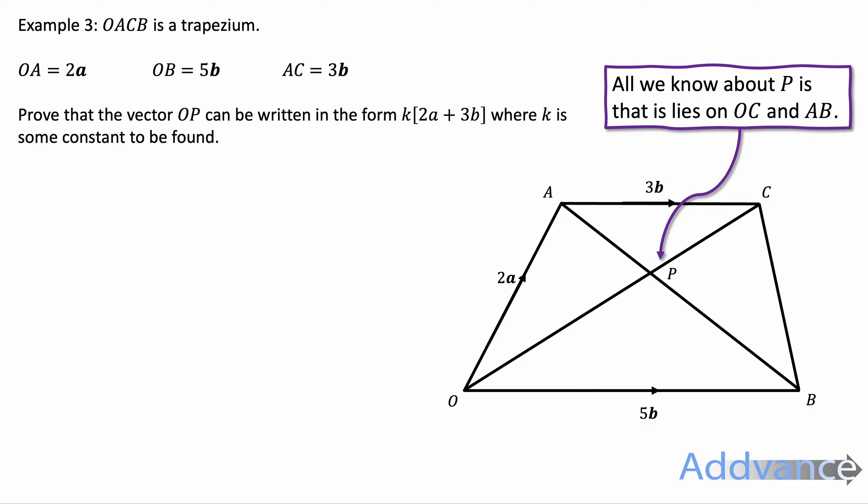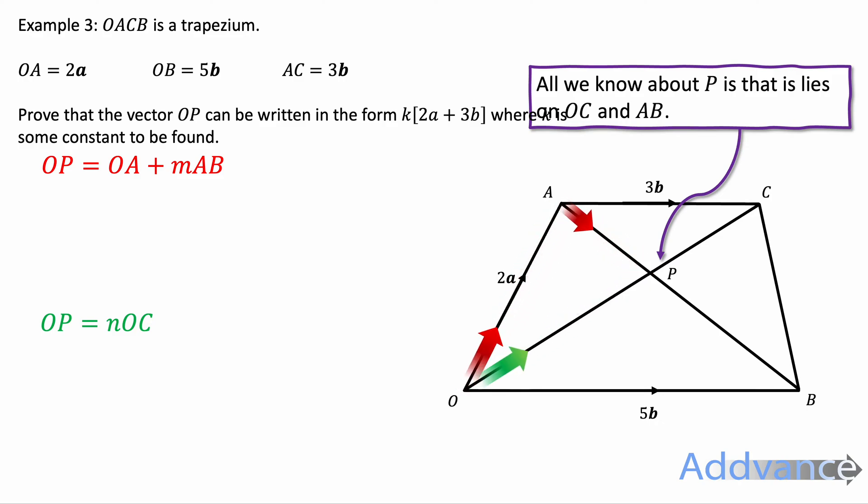All we know about P is it lies on the lines OC and AB because it's the point where those two intersect. And so we're going to find two separate expressions for OP. One expression is going along the red path and the other expression is going along the green path.